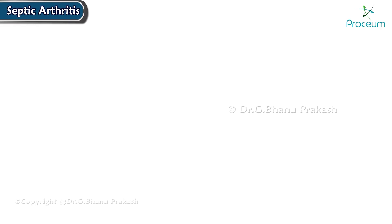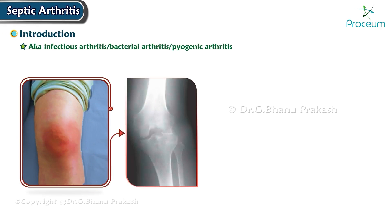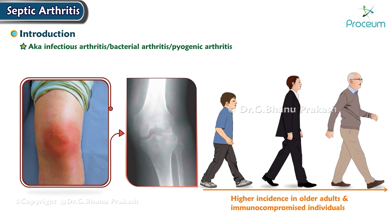Septic arthritis, also known as infectious arthritis, bacterial arthritis, or pyogenic arthritis, affects individuals of all ages with a higher incidence in older adults and immunocompromised individuals. It commonly affects large joints such as the knee, hip, and shoulder.